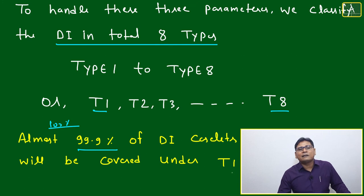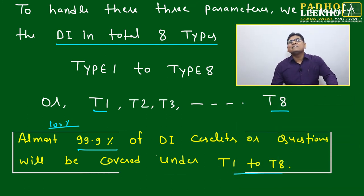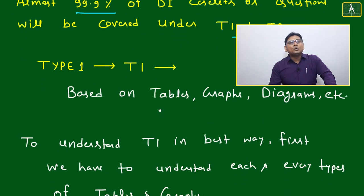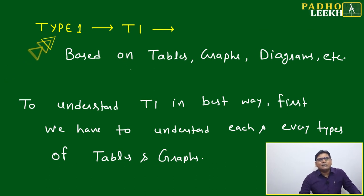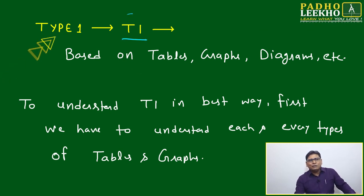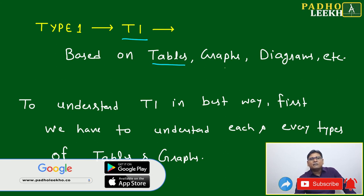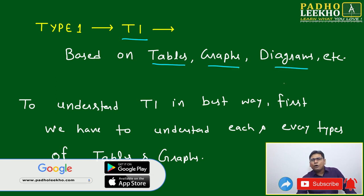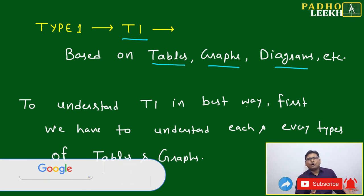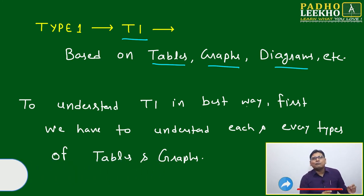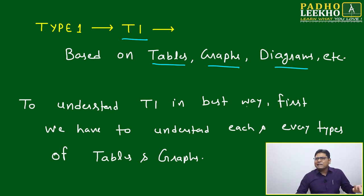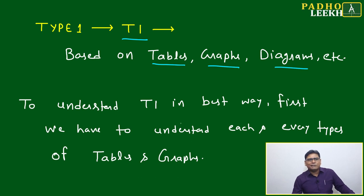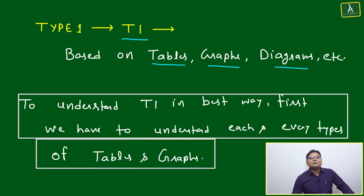Almost 100% of DI caselet questions will be covered under T1 to T8. The next challenge is understanding the tools for each type. T1 — Type 1 — is based on DI caselets that use tables, graphs, diagrams, plots, and scales for data representation. T2 — Type 2 — is based on sets and subsets, using Venn diagrams. To understand T1 well, we must understand each type of table and graph.